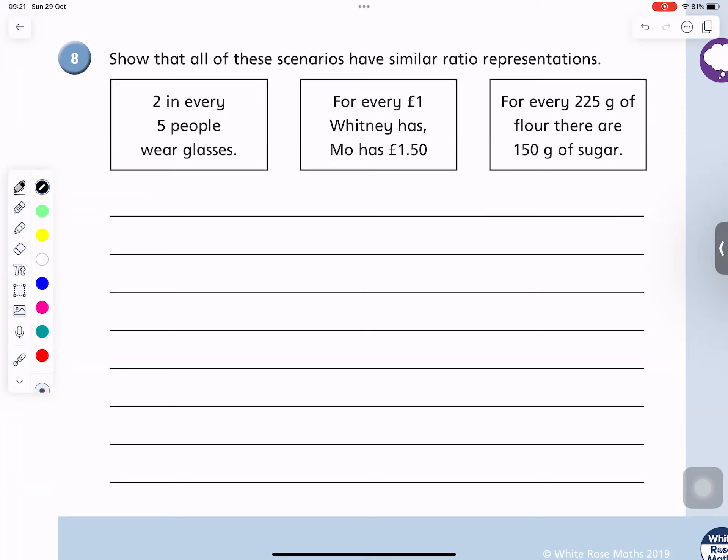So the way you do this kind of question, Luca, is two in every five people wear glasses. So what that means is either you wear glasses or you do not wear glasses. So two people wear glasses. So how many will not wear glasses?